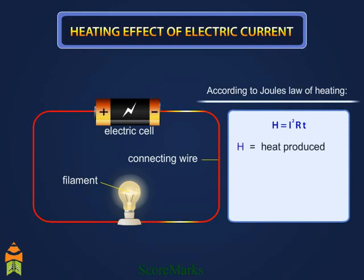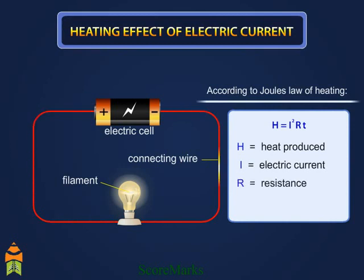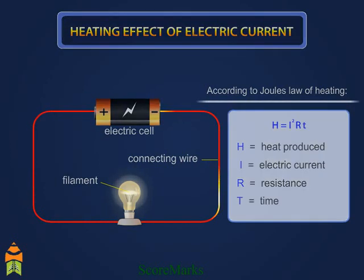Where H is the heat produced, I is the electric current, R is the resistance of the conductor, and T is the time for which the current passes through the conductor.